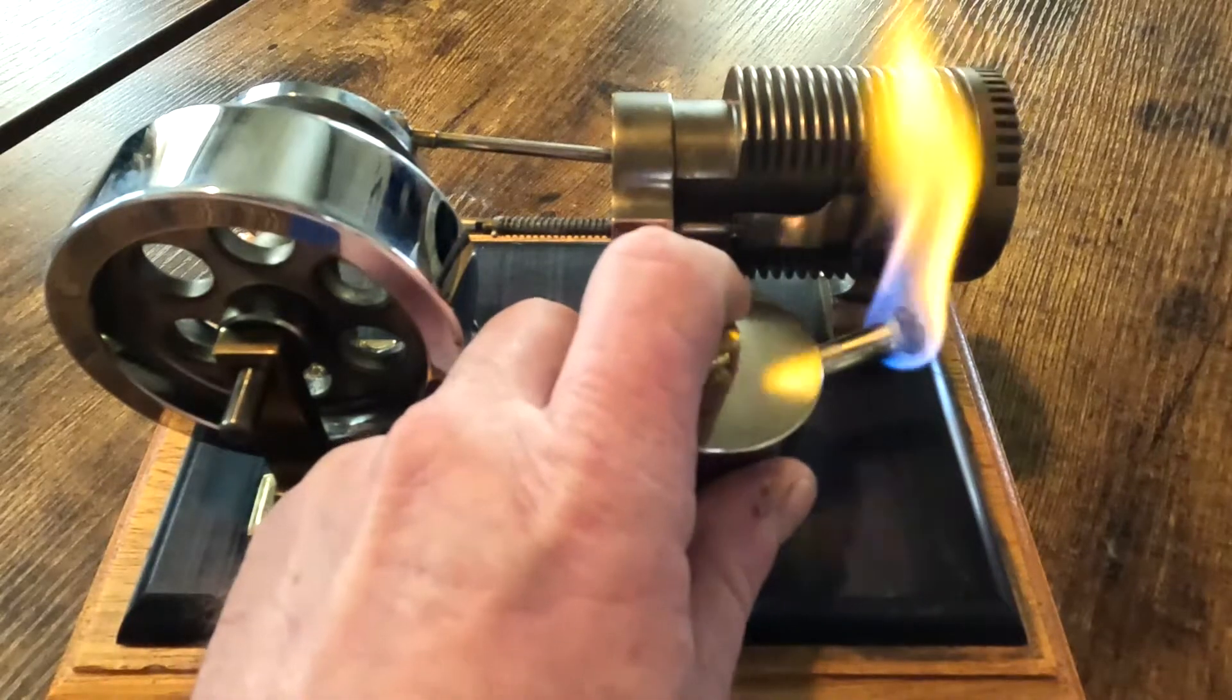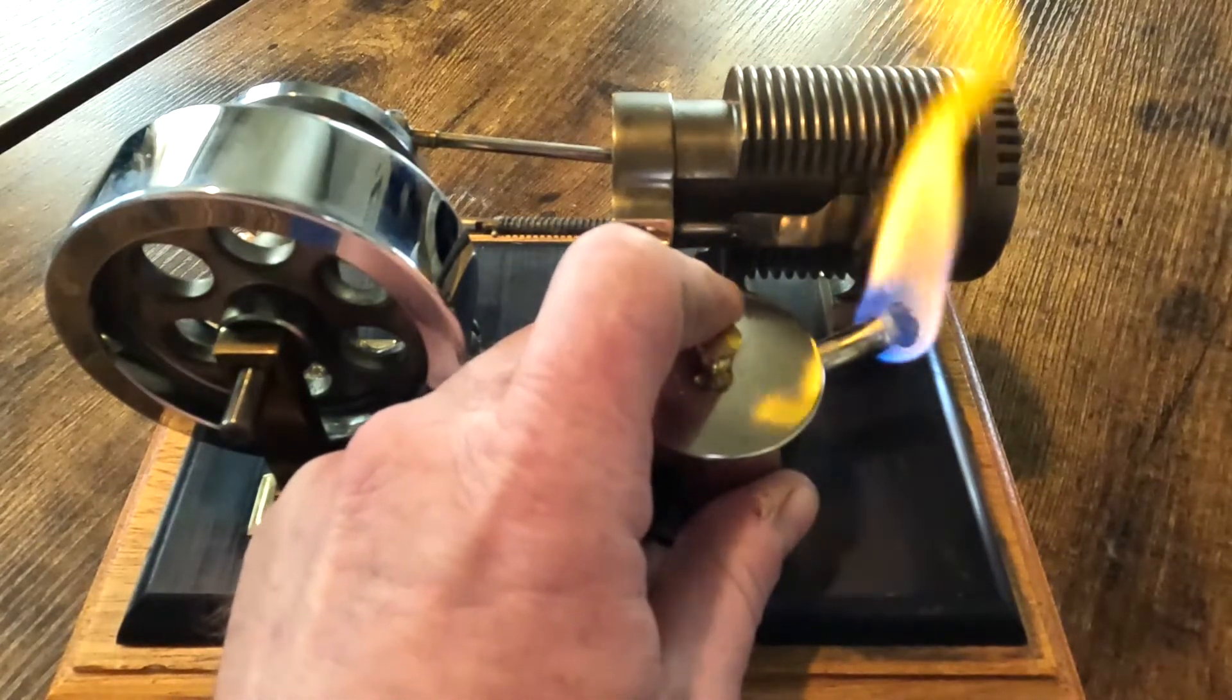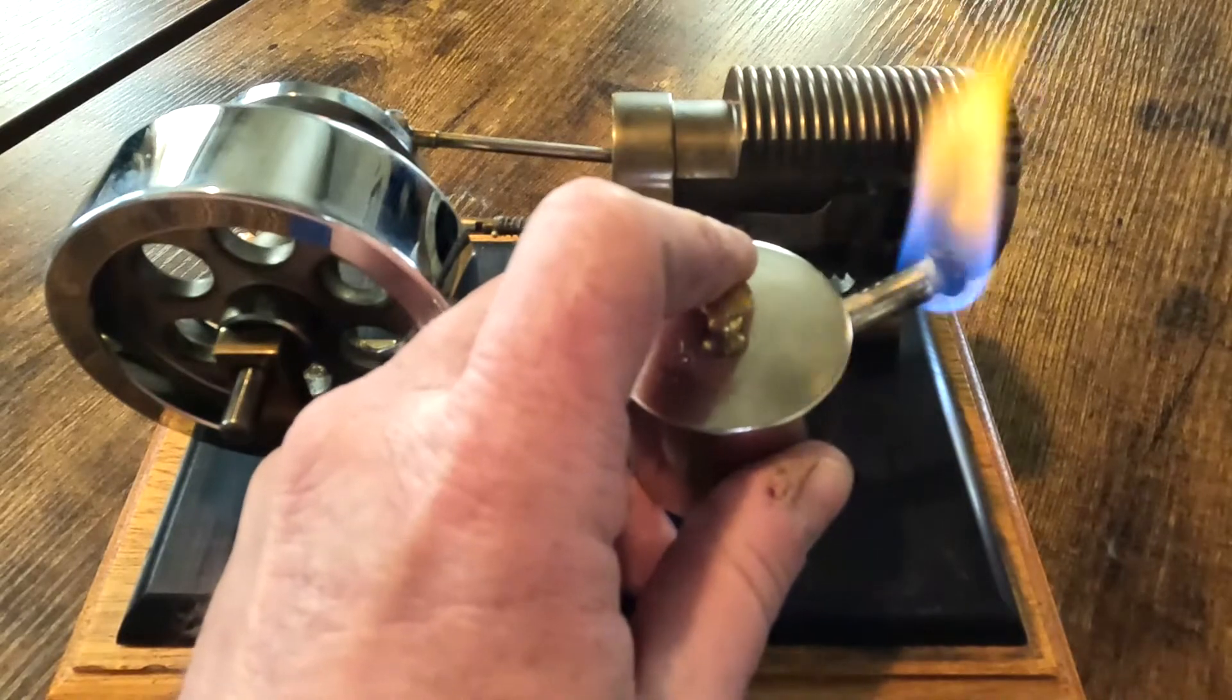So we've got a big flame burning. We'll blow that out and shorten our wick up a little bit. See if we can get it to run a little bit slower for you.